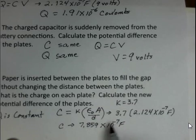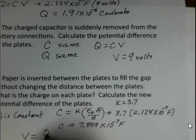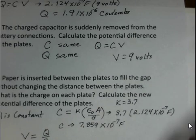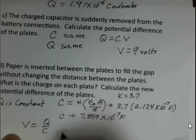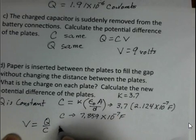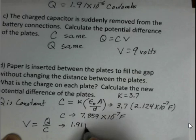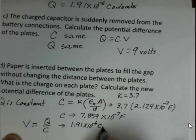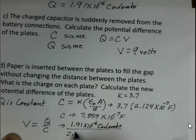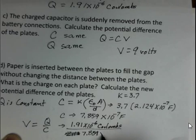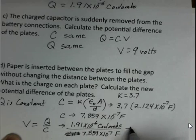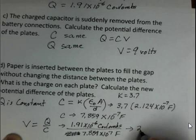How's that going to affect the potential difference? V is Q over C. Q equals CV is our base equation. So if I rearrange it, V equals Q over C. And we've got the same Q that we had before, that was 1.91 times 10 to the minus 6 coulombs. The capacitance value is the bigger one with the dielectric: 7.859 times 10 to the minus 7 farads. And we divide those two and we get 2.43 volts.